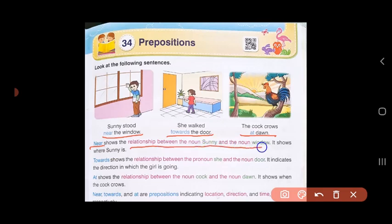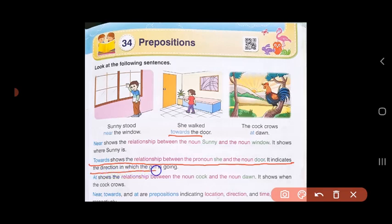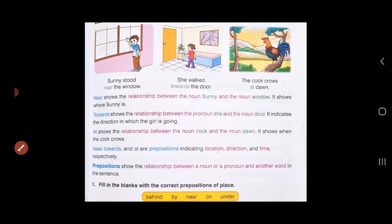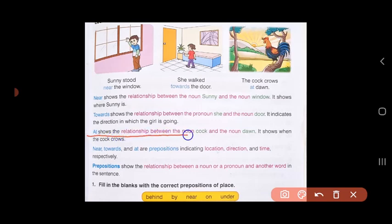So children, near, towards, and at - all these three words are called prepositions. And what are they showing us? Near is showing us the location. Towards is showing us the direction. At is showing us the time. So prepositions show the relationship between a noun or pronoun and another word in the sentence.